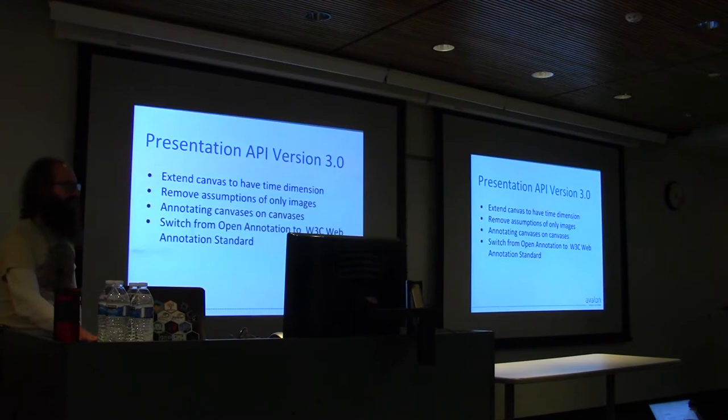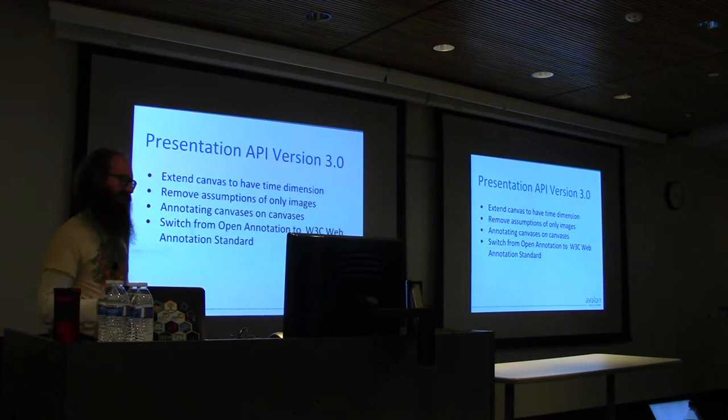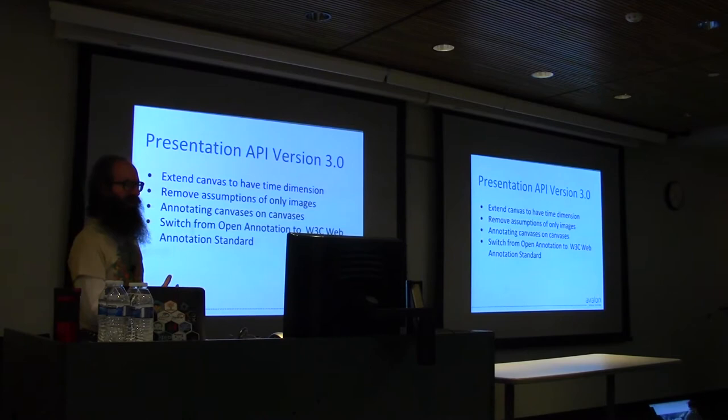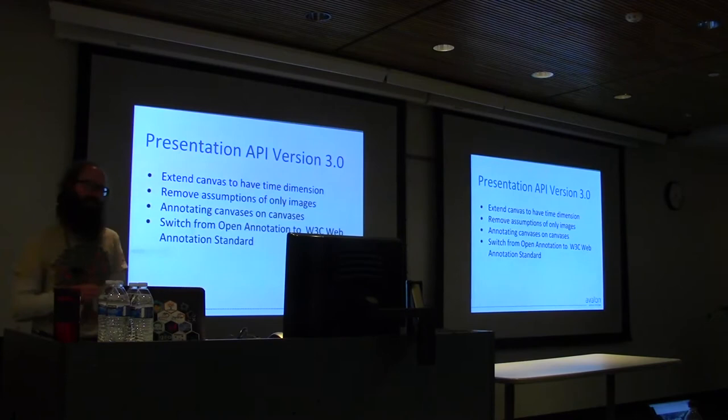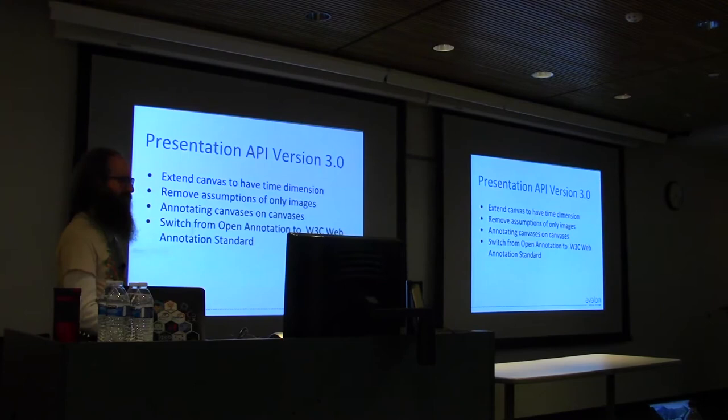There have been AV interest group meetings happening monthly. The main work out of that was to inform a new version of the Presentation API spec — version 3.0 — which is currently in an alpha/beta state but is fairly stable. The final version is hopefully not too long away. The main thing is to take that shared canvas and add a time dimension: over a course of time you can paint different things onto that canvas.